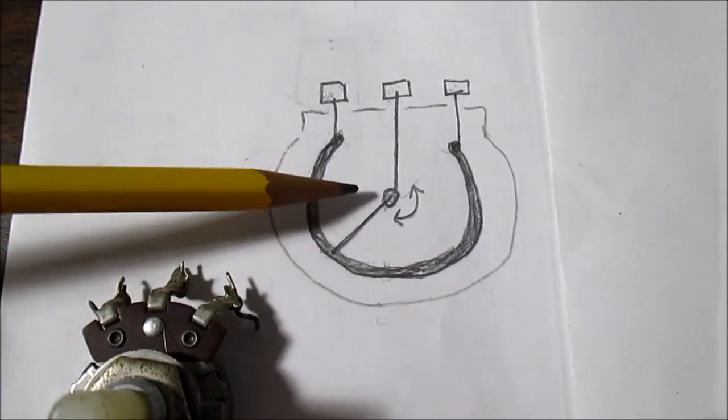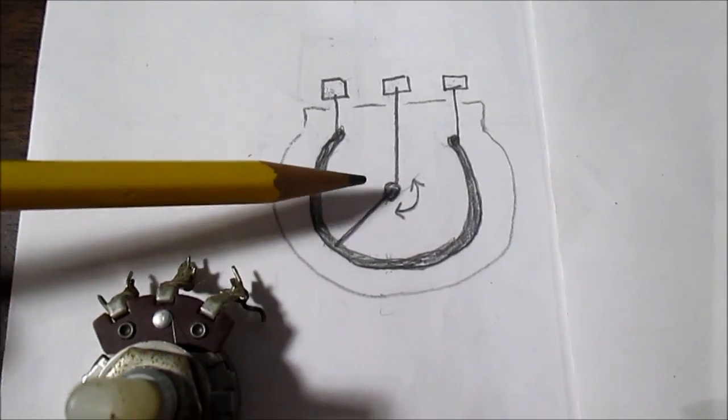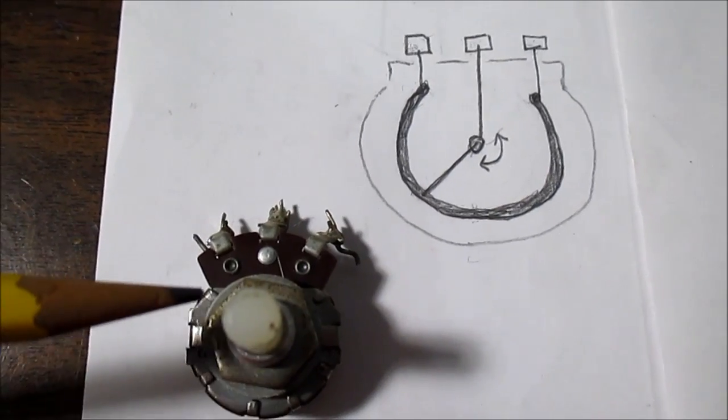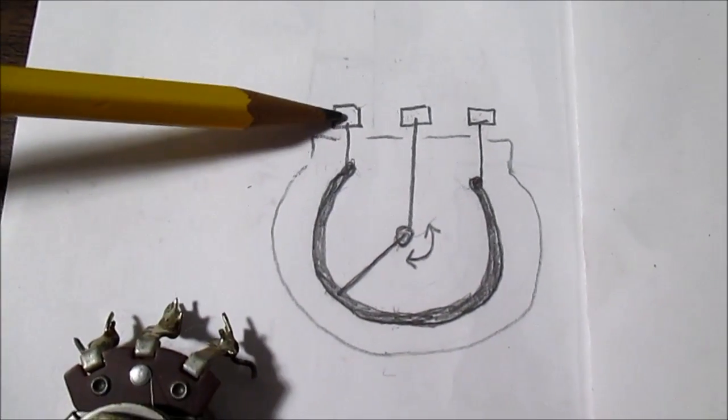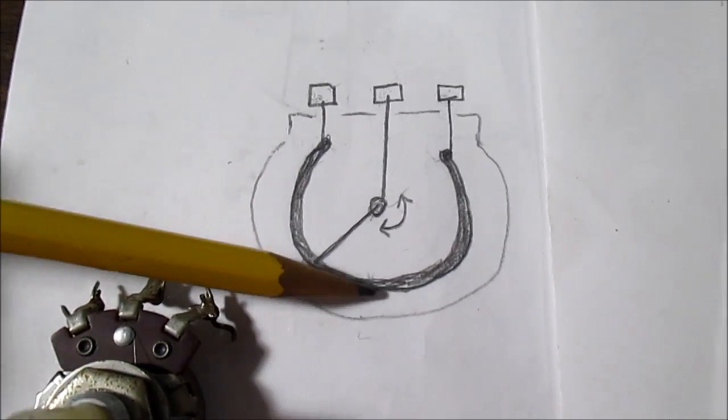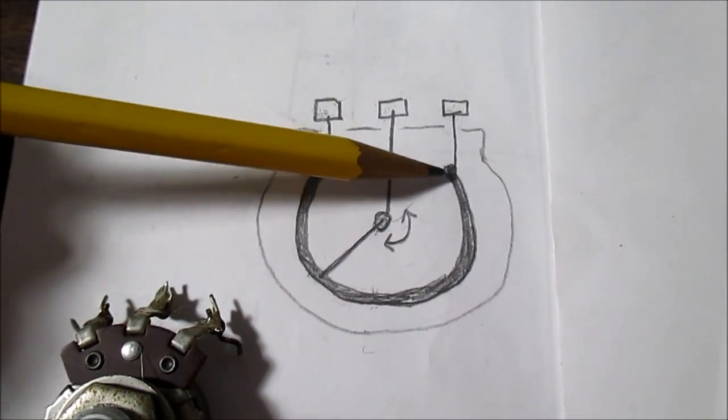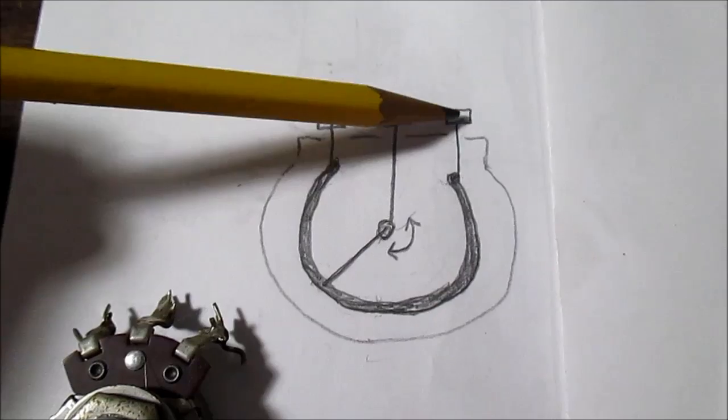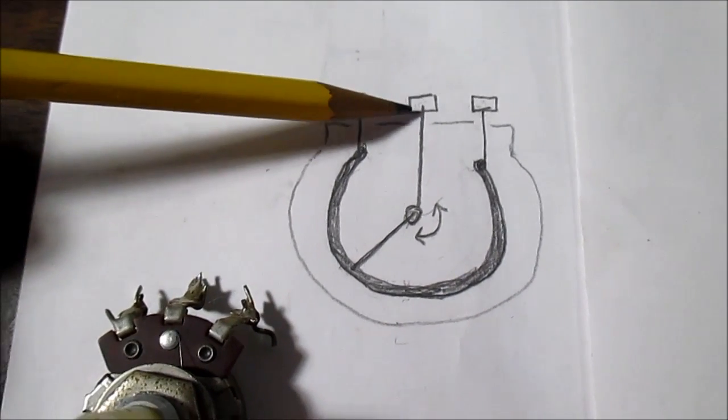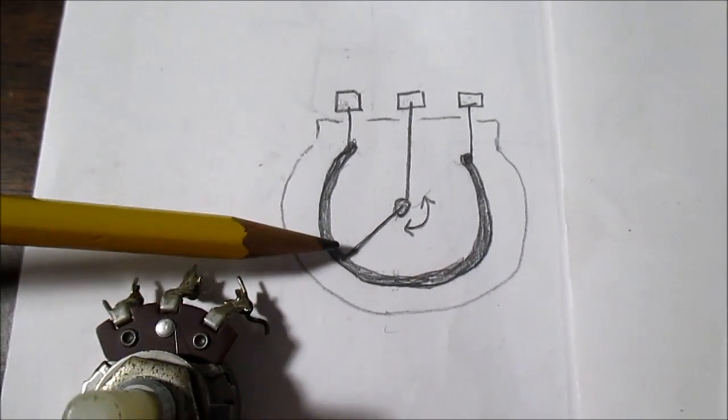We're looking down at the potentiometer from the front like this one here, and the three lugs inside. There's a resistive material - the ends are connected to the outermost lugs. The center lug is connected to what's called the wiper arm, and this is what moves.